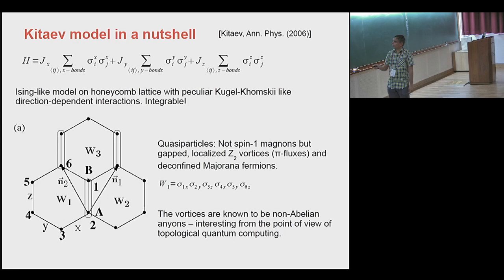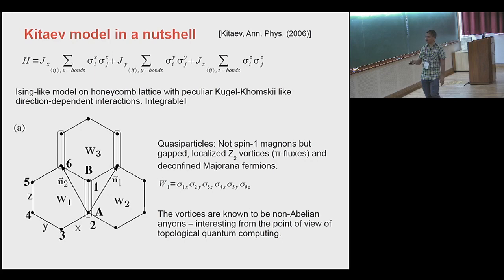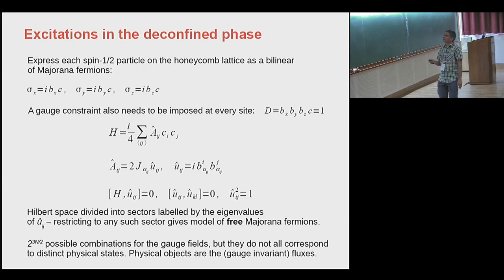What are these vortices? If you look at any flux operator around any loop — take this elementary plaquette labeled by vertices 1 through 6 — you look at the bonds going out of all these vertices and multiply the spin components associated with the bond direction. At site number 1, the bond going out is an X-type bond, so you put sigma-1-X. These vortices turn out to be conserved quantities. These are known to be non-abelian anyons, interesting for topological quantum computing, though that is not our focus.